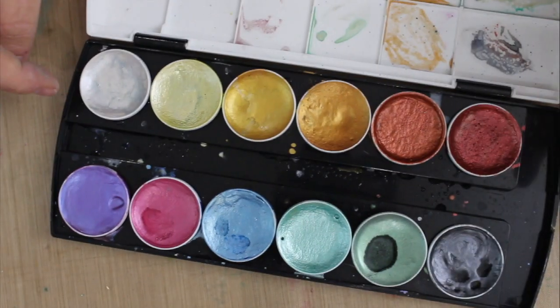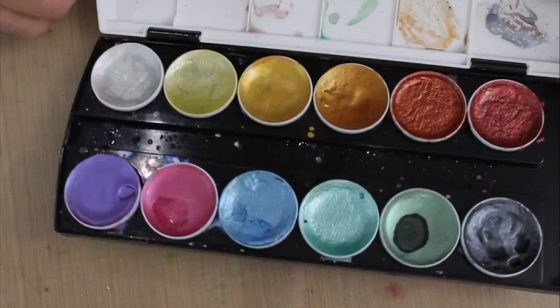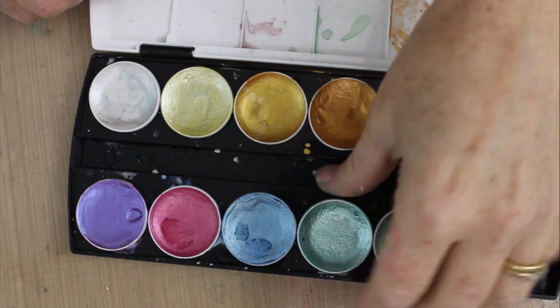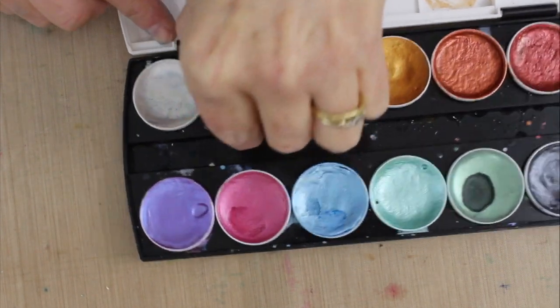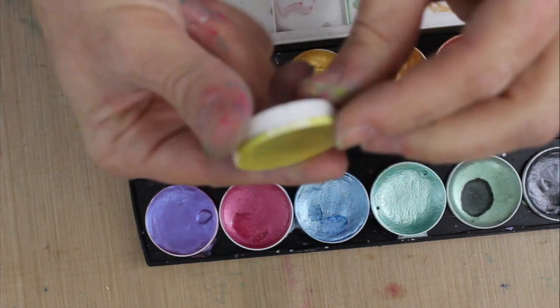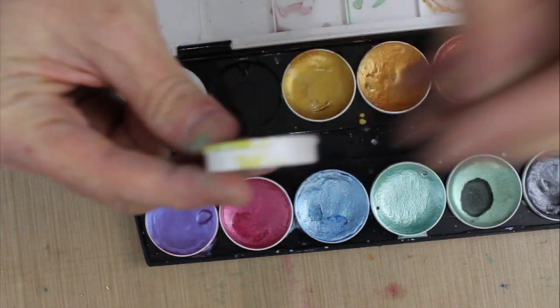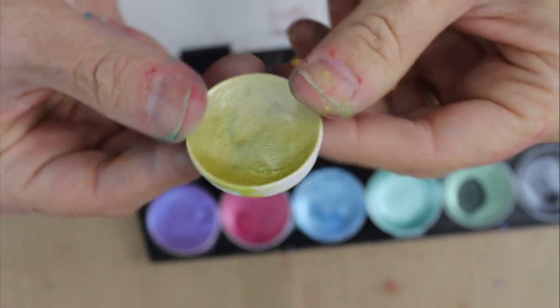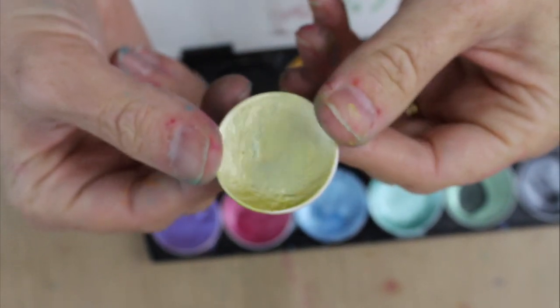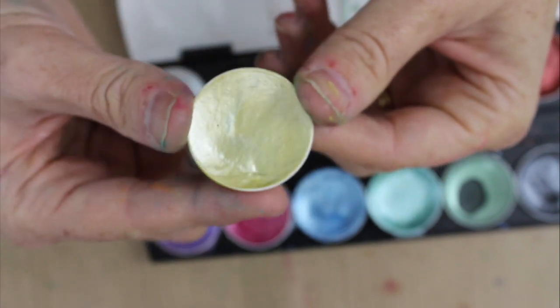In this set you have 12 colors and I'm going to pop out the pan so you can see it. I have already been using these so they were a little more filled when we started, but I just want to show you the depth of the pan and approximately how deep it is and how filled it was.